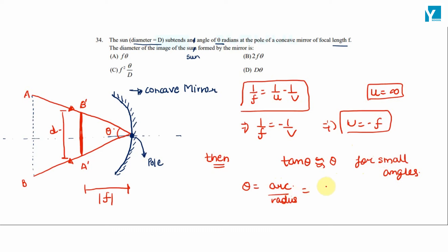For this case, arc is d and radius is the magnitude of f, which is f. This implies the image diameter d equals theta times f.